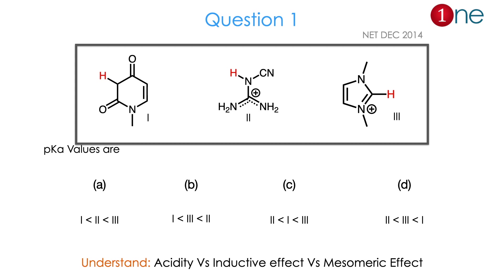Let us see question number 1. The starting material — all are amines. In those amines, they are asking pKa values. Lower the pKa, higher will be the acidity. They are given the choices of the hydrogen — which hydrogen will be acidic? Which is near to carbonyl, near to cyanide, or near to the ring? From the question and the nature of nitrogen, you might realize the question is really about acidity versus inductive effect as well as the mesomeric effect of lone pair of nitrogen. The answer is A.